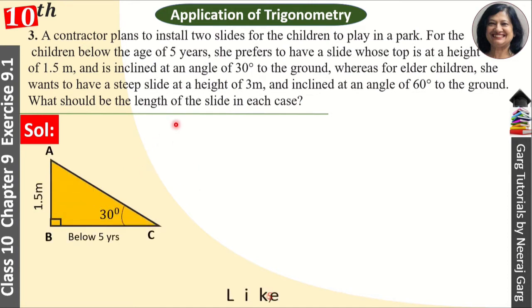The diagram will look like this: for the 5 years below, it is at a height of 1.5 meter. The top is at a height of 1.5 meter and the ground will be at an angle of 30 degrees. And the older children, the height of 3 meter is at an angle of 60 degrees.